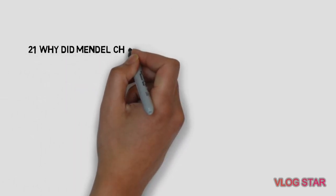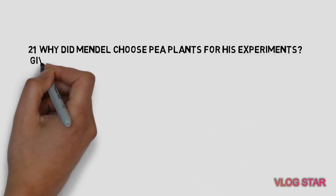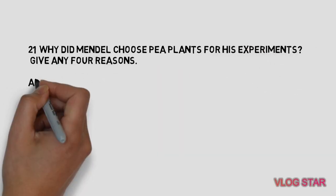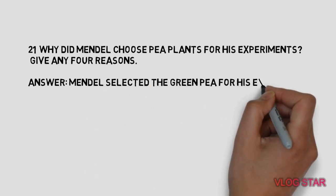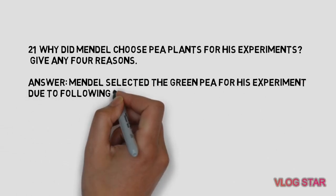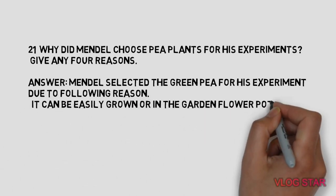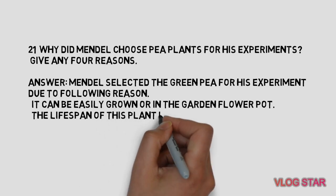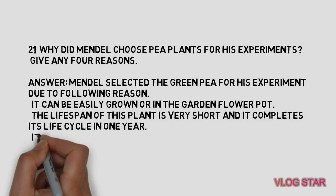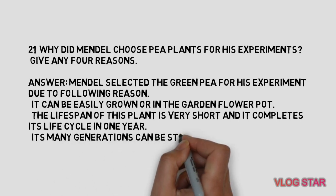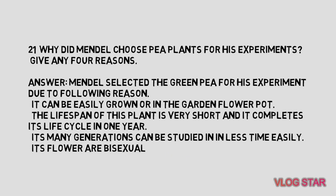Why did Mendel choose pea plants for his experiments? Give any four reasons. Mendel selected the green pea plant due to the following reasons: it can be easily grown in a garden or flower pot; the lifespan is very short and it completes its life cycle in one year; many generations can be studied in less time; and its flowers are bisexual.